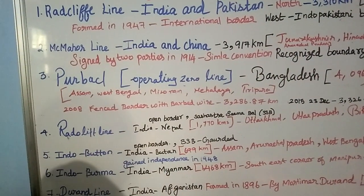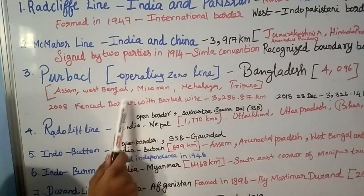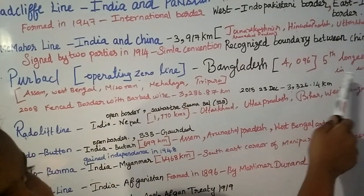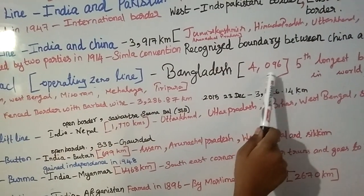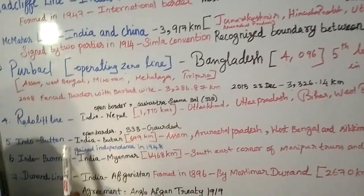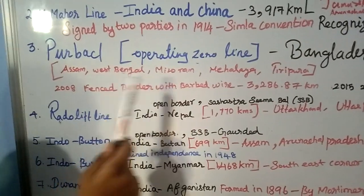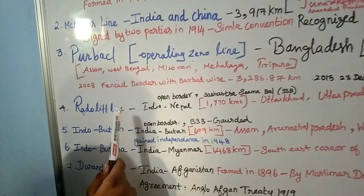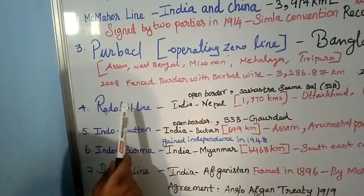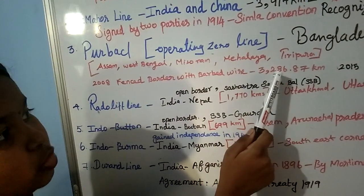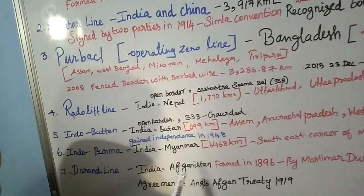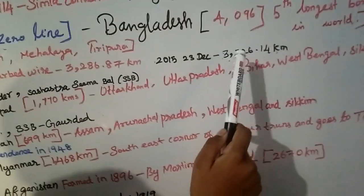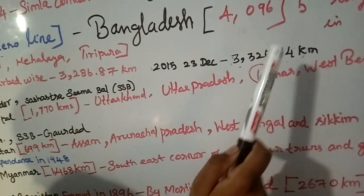The next one is Purbank, which is the border between Bangladesh and India. It is the fifth longest boundary in the world at 4,096 km. The shared states are Assam, West Bengal, Mizoram, Meghalaya and Tripura. This is a fenced border with barbed wire — 3,208.87 km fenced by 2008, and 3,326.14 km fenced by 23rd December 2015.